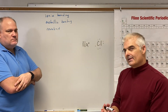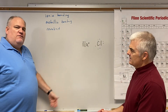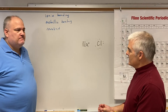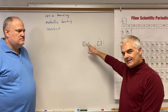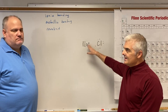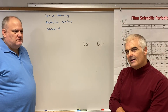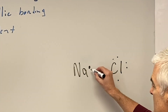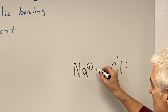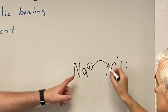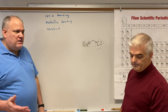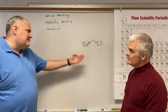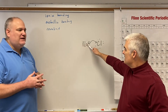All atoms want a full outer shell of 8 — 8 is the magic number. For sodium to get 8, he'd have to gain 7, but there's another way: he can lose electrons. In an ionic bond, one atom steals electrons from another. Chlorine is going to steal that electron from sodium.